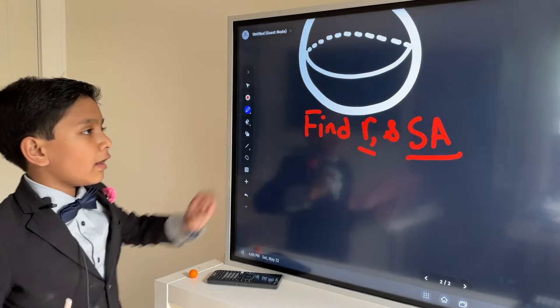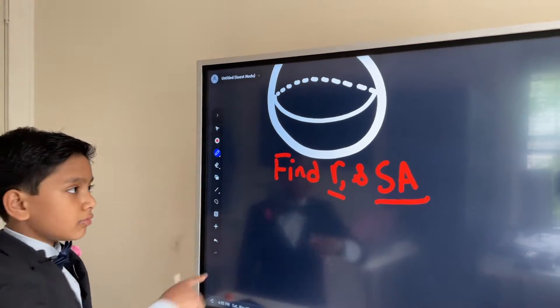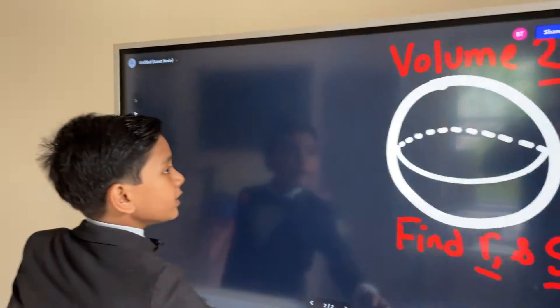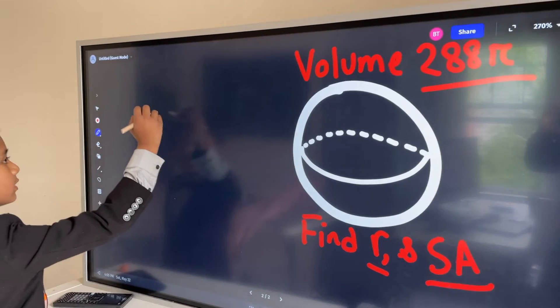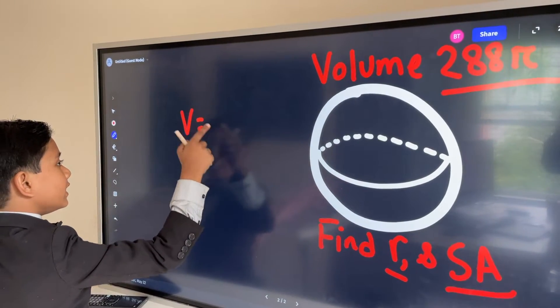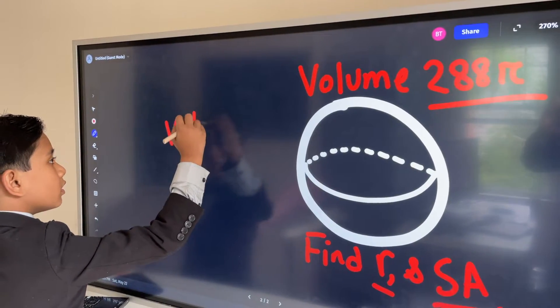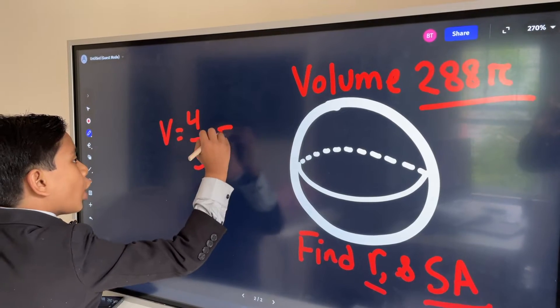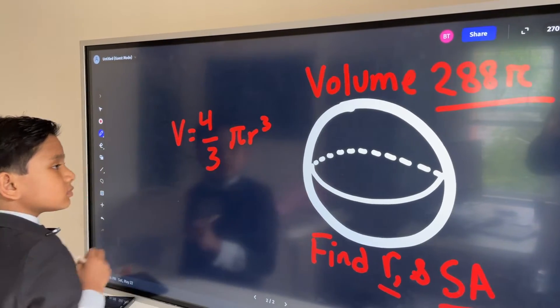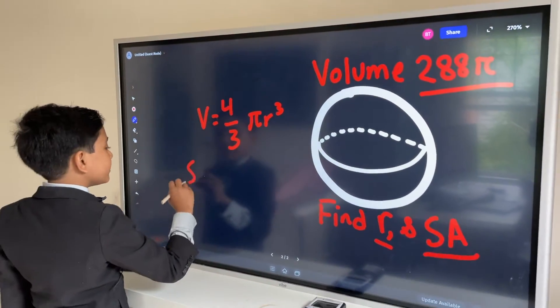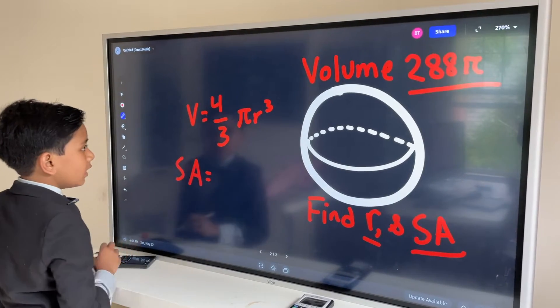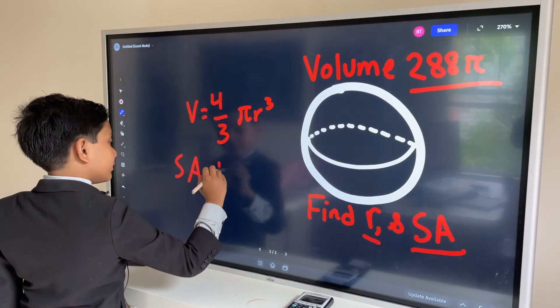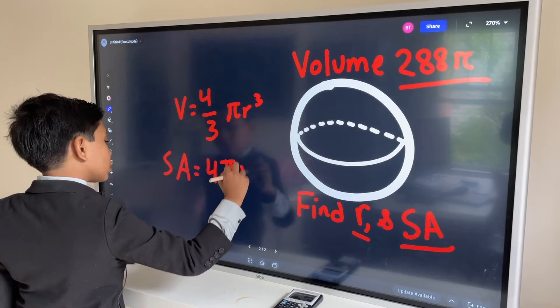First of all, how do you find the volume? Well, to find the volume, you need this equation: V is equal to 4 thirds pi r cubed. And for the surface area, you will have to have this formula: 4 pi r squared.